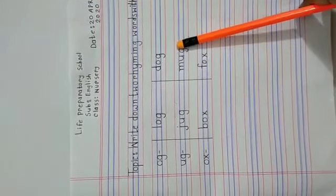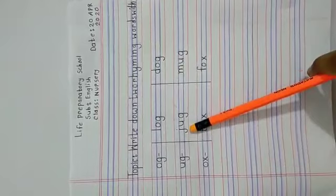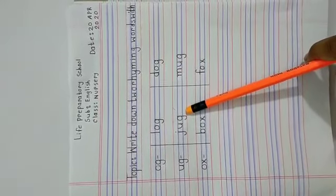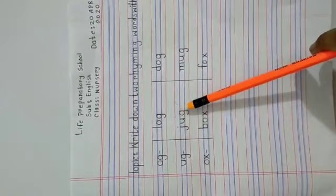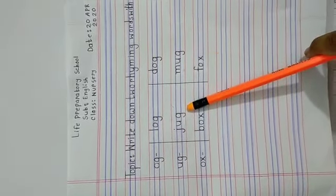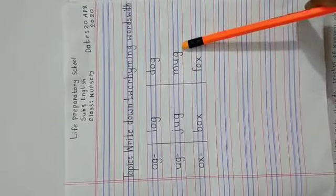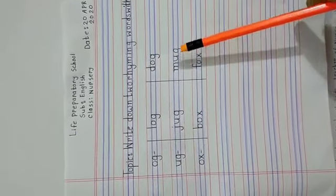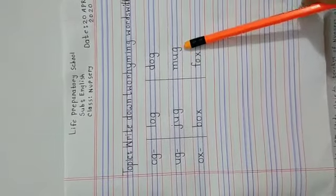Now write J before U-G, then make a word, J-U-G, jug. After this write M before U-G, make another word, M-U-G, mug.